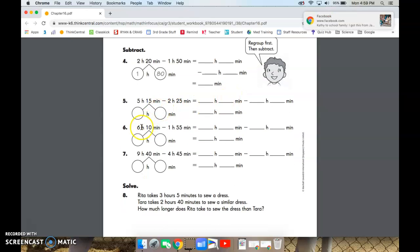So now let's look at number six. Six hours and 10 minutes. So we're going to change that to five hours and 70 minutes. And it's still going to be taking away the one hour and 55 minutes. So that equals, five hours minus one hour is four hours. 70 minutes minus 55 minutes is 15 minutes. So four hours and 15 minutes.